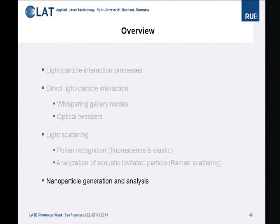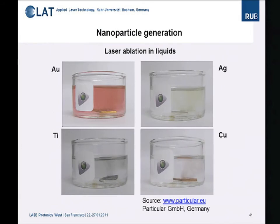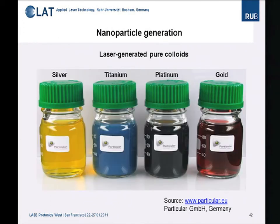Finally, I want to show some examples of nanoparticle generation. We go from the microparticles shown before — in the range of about 100 micrometers — down to nanometer-scale particles. We use laser ablation with a femtosecond laser to ablate gold, silver, titanium, or copper in a water solution. You can see the plasma resonances: gold gives a red color, silver yellow, titanium gray, and copper a brown color. These particles are quite stable in their solution, with silver being very bright and titanium quite blue at high concentrations.